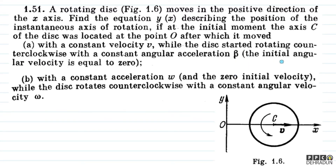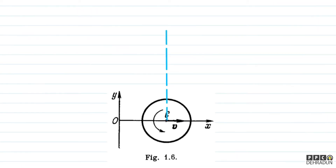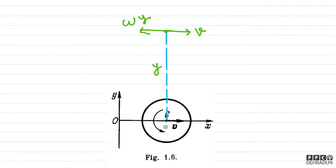As given in the problem, the initial angular velocity is 0. So let's think about where that point will be which we can call the ICOR at this instant. As we discussed, what we need to do is come in the perpendicular direction of the velocity vector and find a point, let us say at y distance, such that v (to the right) becomes equal to omega times y (to the left).